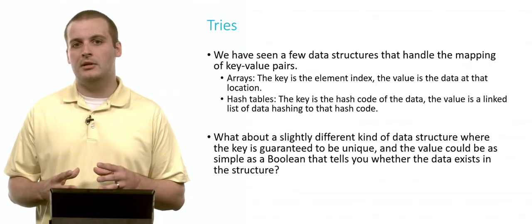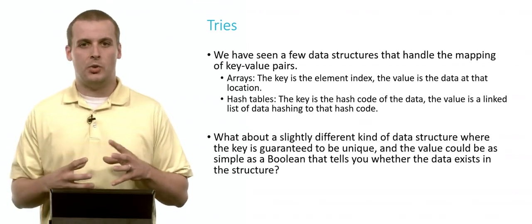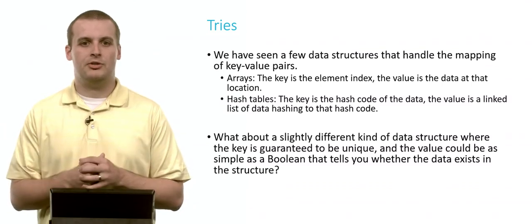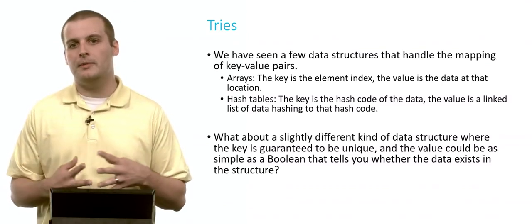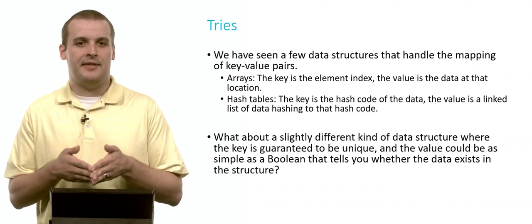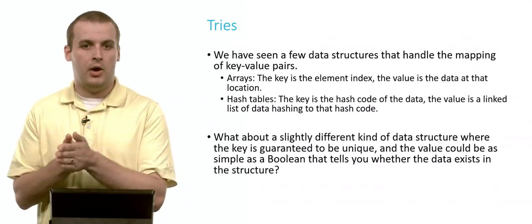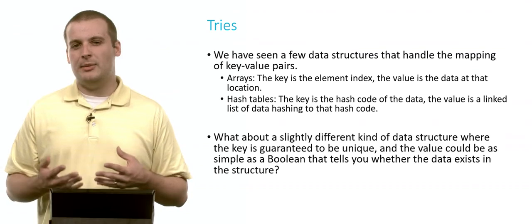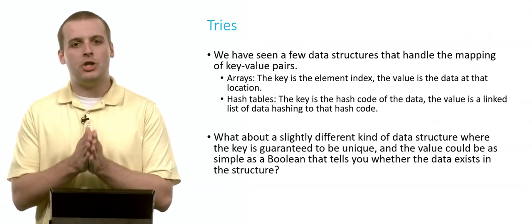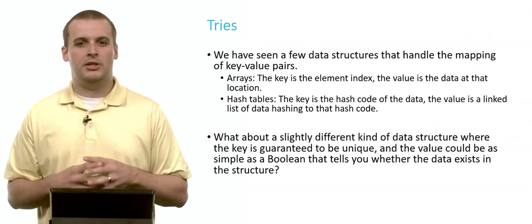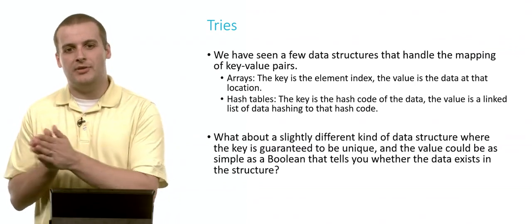We've seen several different data structures that handle the mapping of key value pairs, mapping some piece of data to some other piece of data so we know where to find information in a structure. For an array, the key is the element index, array location 0, array location 1, and so on. The value is the data that exists at that location. With a hash table, the key is the hash code of the data, and the value is that linked list of data that hashes to that hash code.